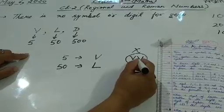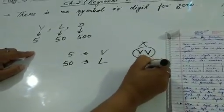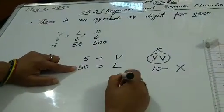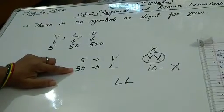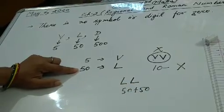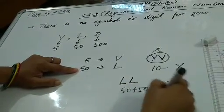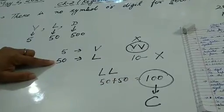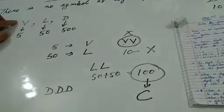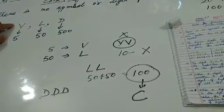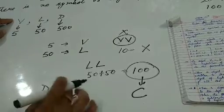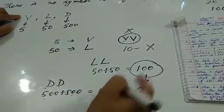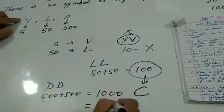VV means 5 plus 5 that is 10. For 10, Roman numerals में एक अलग symbol है, that is X. Same ऐसे ही आप L और L को repeat नहीं करोगे — LL means 50 plus 50, that is 100. जबकि Roman numerals में 100 के लिए special symbol है, that is C. आप LL नहीं करोगे, LL is wrong. Same D, D means 500 plus 500 — you cannot repeat it even 2 times. 1000 के लिए भी Roman numerals में अलग से है, that is M.